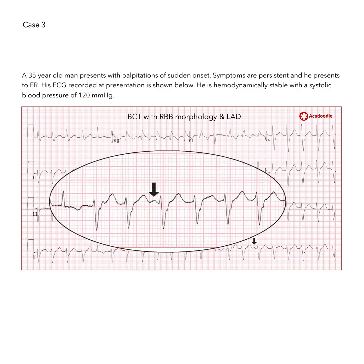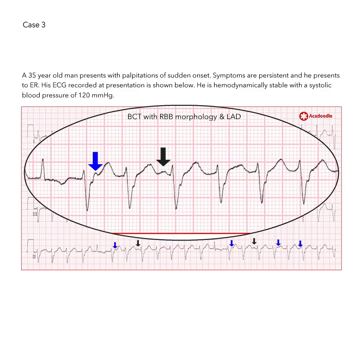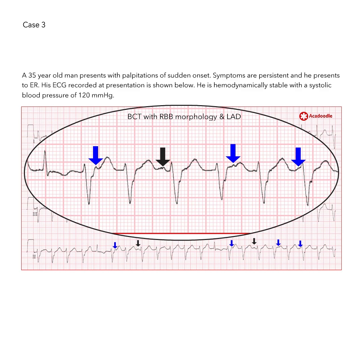In addition, there are recurrent distortions of the ventricular deflections consistent with fusion between these deflections and dissociated P-waves. There is clearly no causative relationship between atrial and ventricular depolarisation, and the presence of AV dissociation implies that a VT is overwhelmingly likely to be the cause of this broad complex tachycardia.